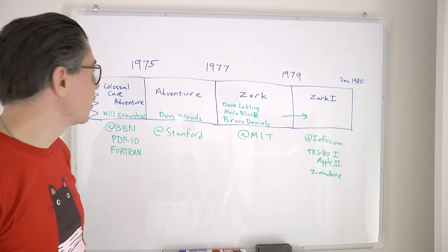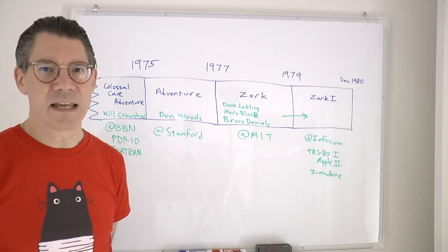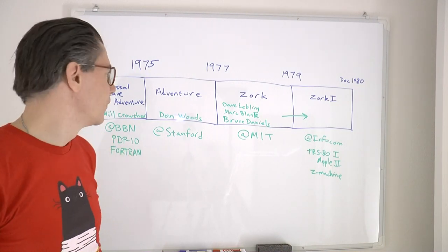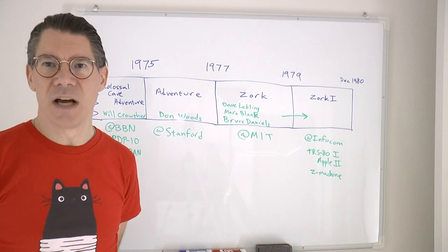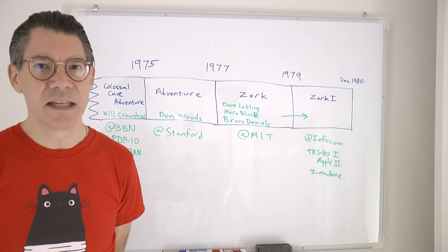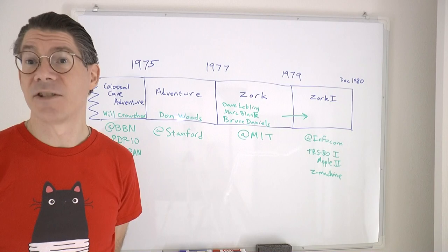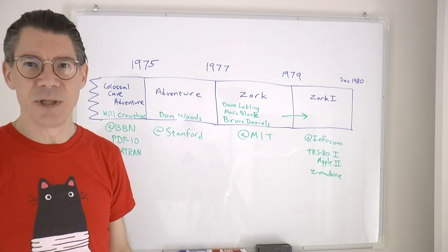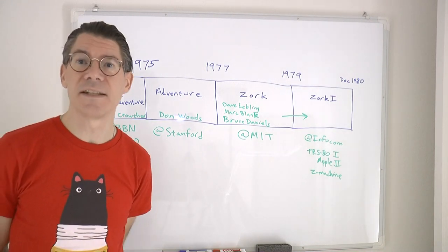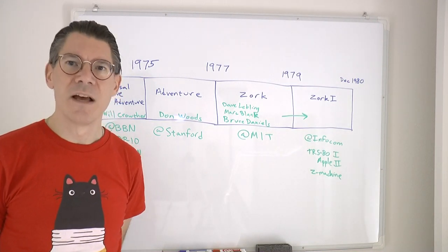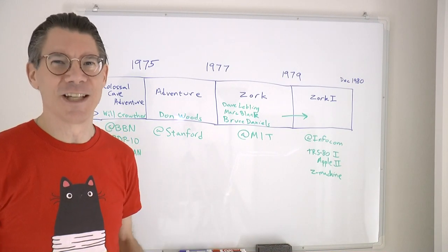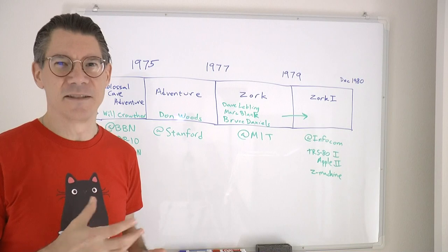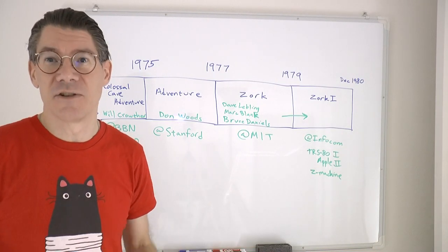It was essentially complete in 1975, and at that point it made its way to Stanford University, where it caught the attention of Don Woods, who decided to dig into the program and add some more fantasy elements. He just called it Adventure. He completed that in 1977 and then released the game and its source code on ARPANET, which at that time connected mainly universities and defense contractors.